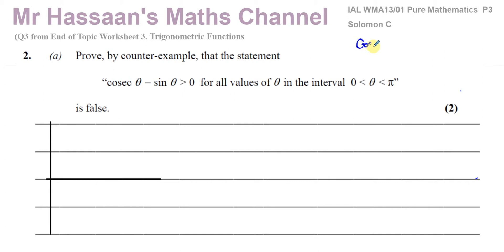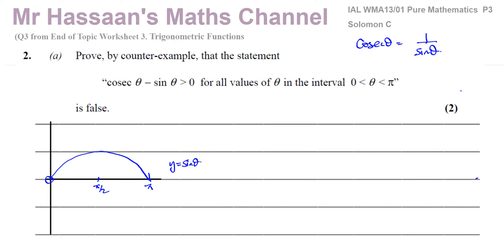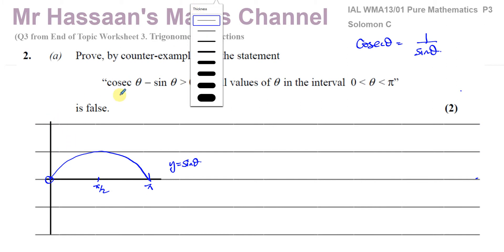Now we know that cosec theta is the reciprocal of sine theta, so it's one over sine theta. If I draw sine theta first between zero and pi, it looks like a hump — reaching its maximum at pi over two, starting and ending at the origin and pi. That's y equals sine theta. Now y equals cosec theta is its reciprocal, so it will start off from somewhere really high near zero, because when sine theta is zero it's like an asymptote. As sine theta increases, one over sine theta gets smaller.